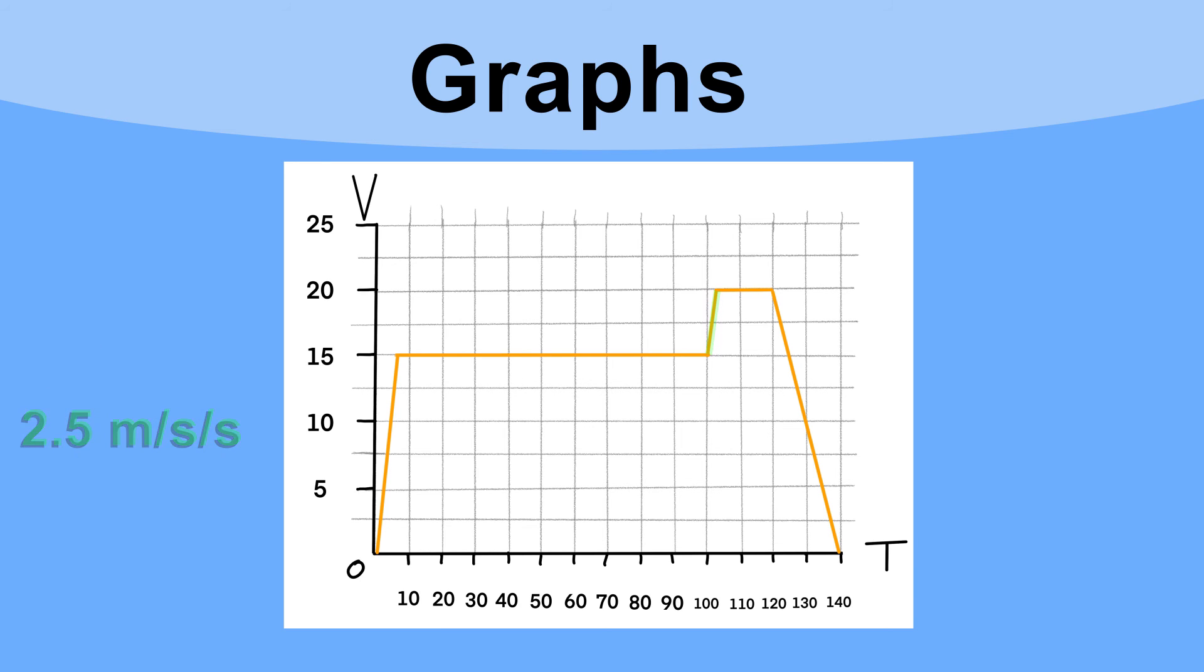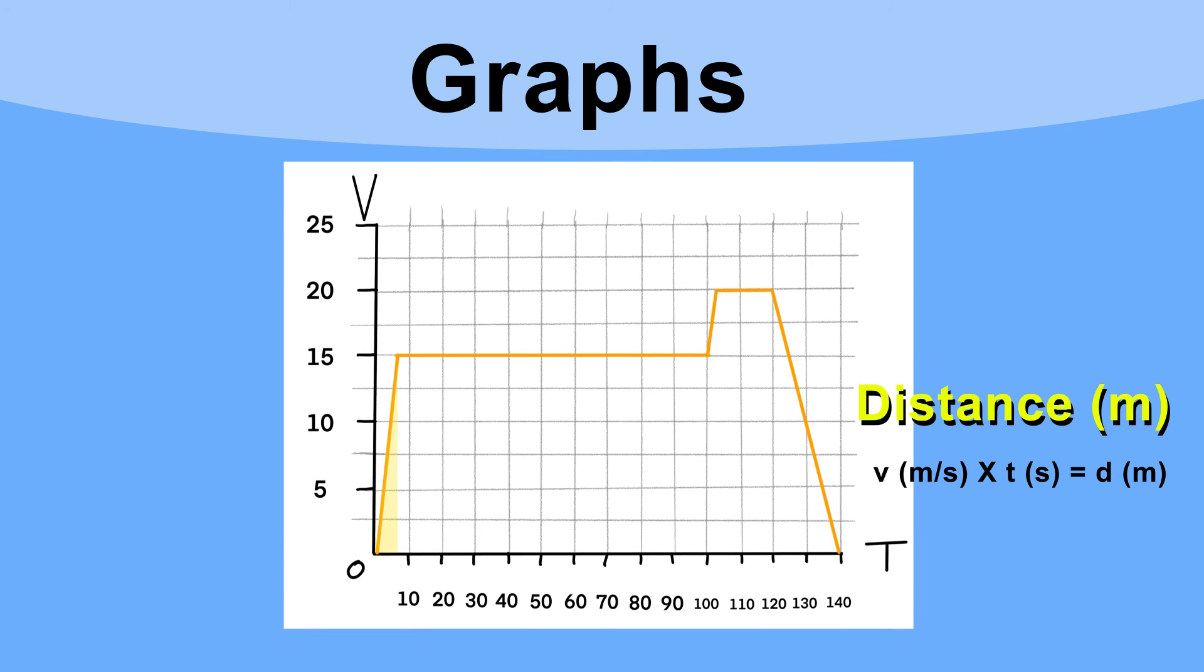Another thing we can find from this particular graph is the distance traveled, which is given by the area under the graph—the speed multiplied by the time. So for the first section where the car's accelerating, we have a triangle. We'd need to use half base times height to find the distance. So the height's 15, the base is 5. So we'd do a half of 5 times 15, which gives us 37.5 meters traveled.